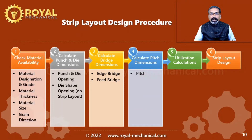Step four is to calculate the pitch dimensions. The raw material strip has to be moved forward after each and every shearing operation. The amount by which the raw material has to be moved forward is the pitch. We will calculate the pitch dimensions in this step.